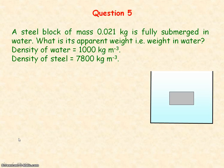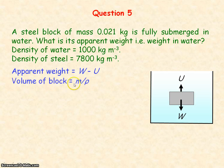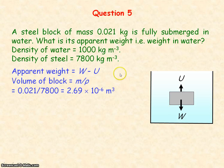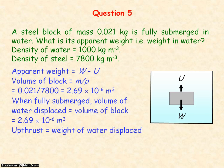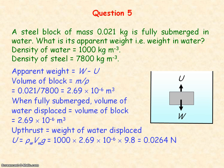Question 5: to determine the apparent weight of an object — that is its weight in water — it will equal its weight minus the upthrust. First, to determine the upthrust, we need the volume of the steel block, which equals its mass divided by its density. Substituting in those values, we get the volume of the block to be 2.69 times 10 to the minus 6 metres cubed. When fully submerged, the volume of the block equals the volume of the water displaced, and from Archimedes principle, upthrust equals the density of water times the volume of water displaced times g, giving an upthrust of 0.0264 newtons.